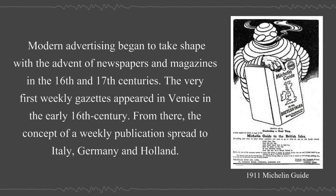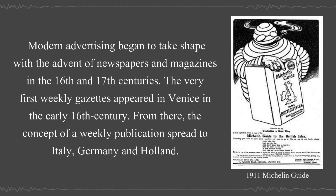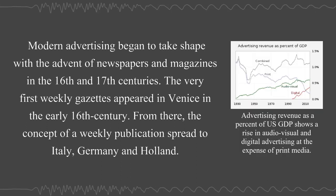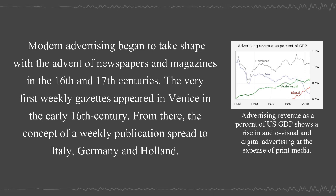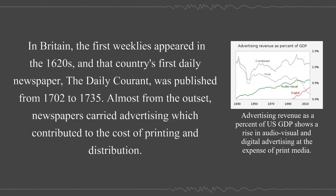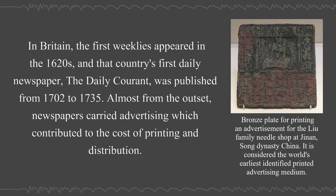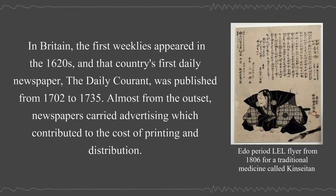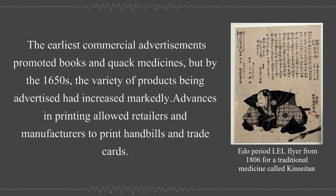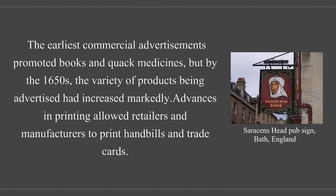Modern advertising began to take shape with the advent of newspapers and magazines in the 16th and 17th centuries. The very first weekly gazettes appeared in Venice in the early 16th century. From there, the concept of a weekly publication spread to Italy, Germany, and Holland. In Britain, the first weeklies appeared in the 1620s, and that country's first daily newspaper, the Daily Courant, was published from 1702 to 1730. Almost from the outset, newspapers carried advertising which contributed to the cost of printing and distribution. The earliest commercial advertisements promoted books and quack medicines, but by the 1650s, the variety of products being advertised had increased markedly.